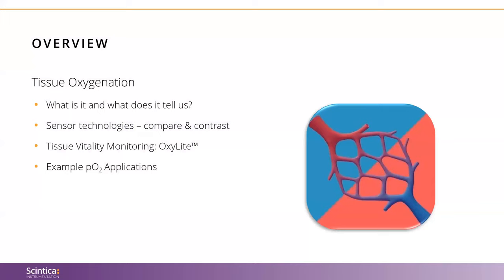Before we begin, let's take a look at what we'll be talking about today. First, we will review tissue oxygenation, its importance, and what it provides us with. Then we'll review four ways that researchers measure in vivo tissue oxygen and compare them. From there, we'll provide an introduction into the OxyLite system by Oxford Optronics, a tissue vitality monitor utilizing phosphorescence quenching technology. And then we'll finish off with some example PO2 data.